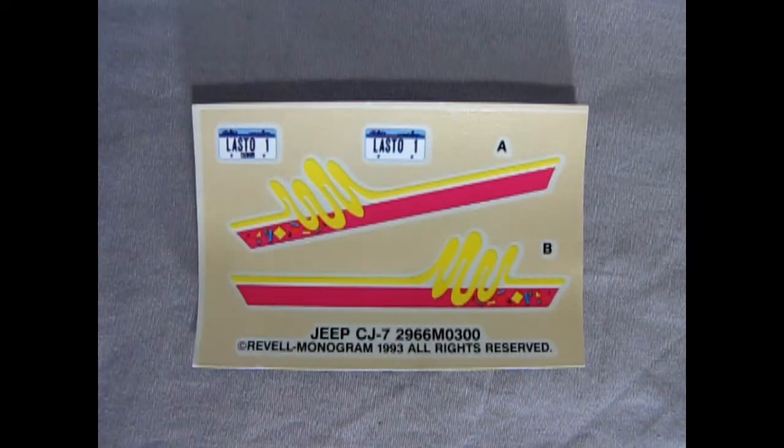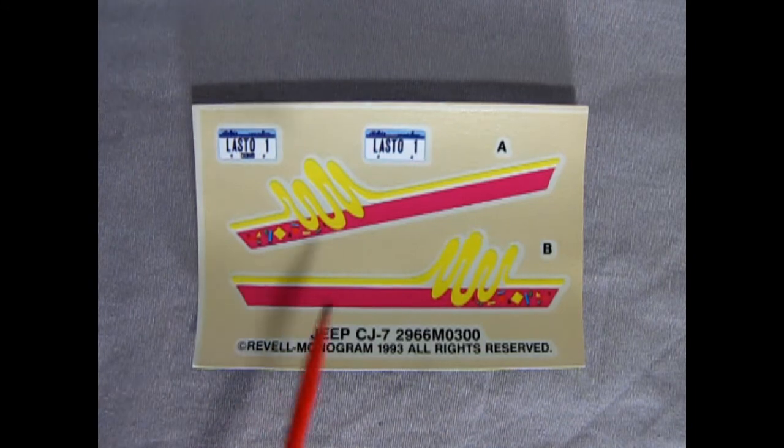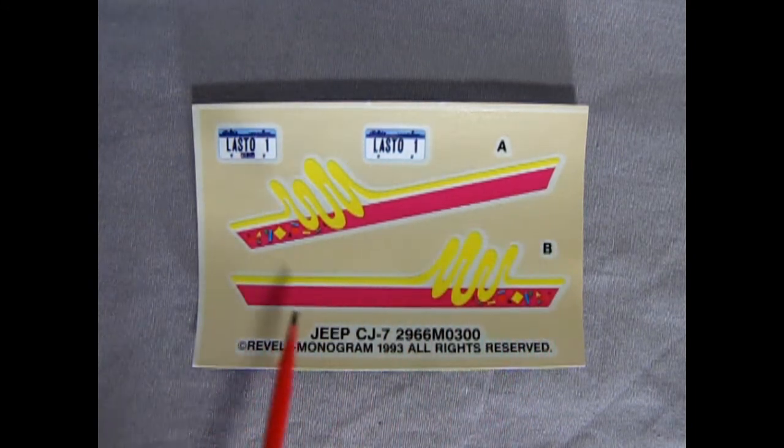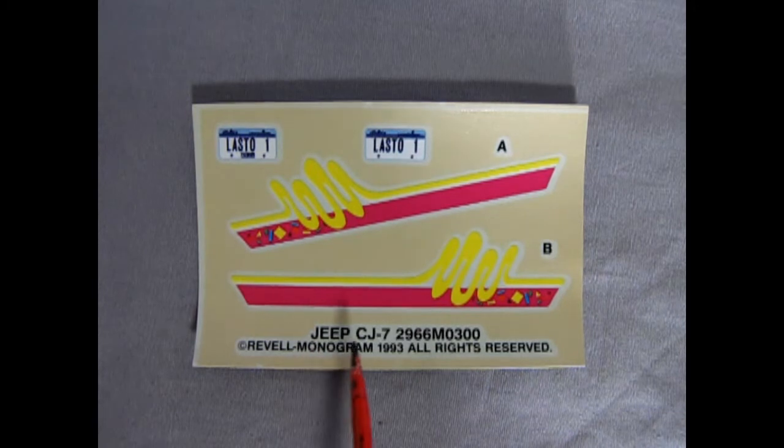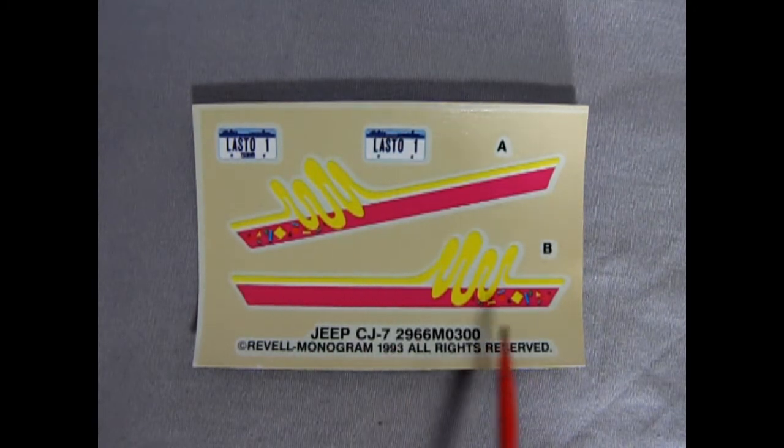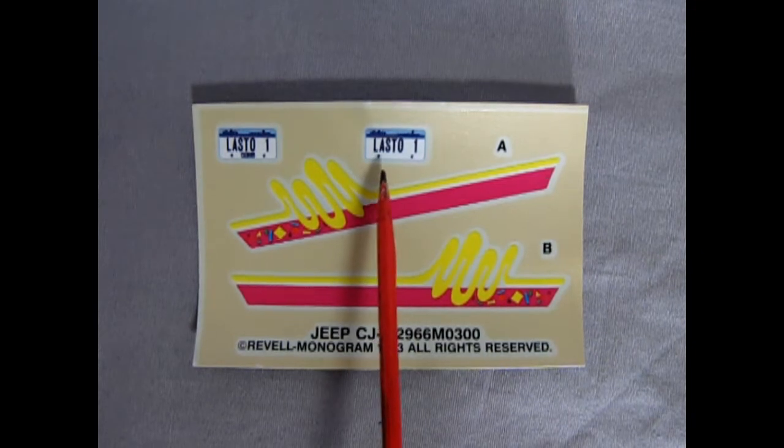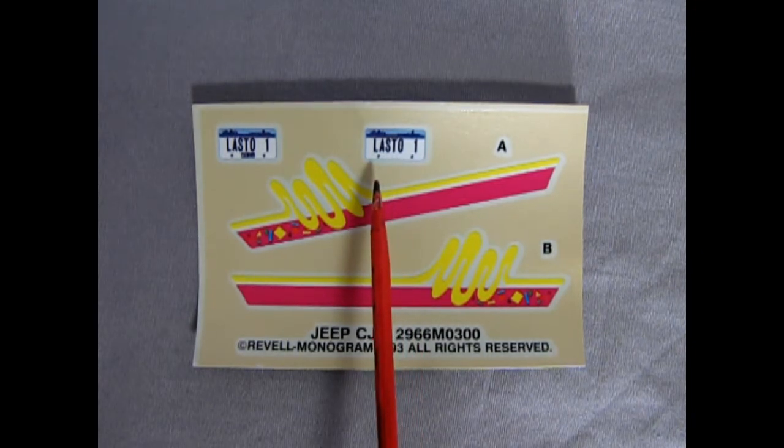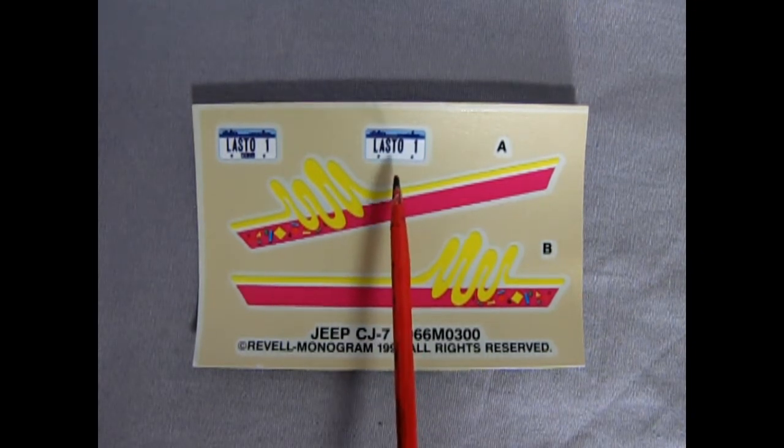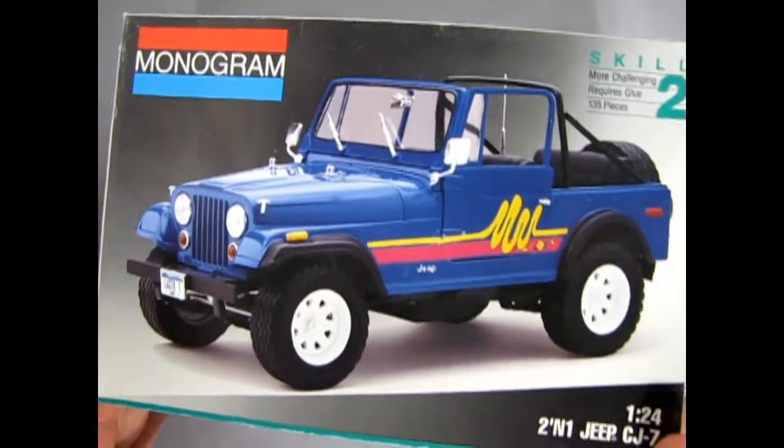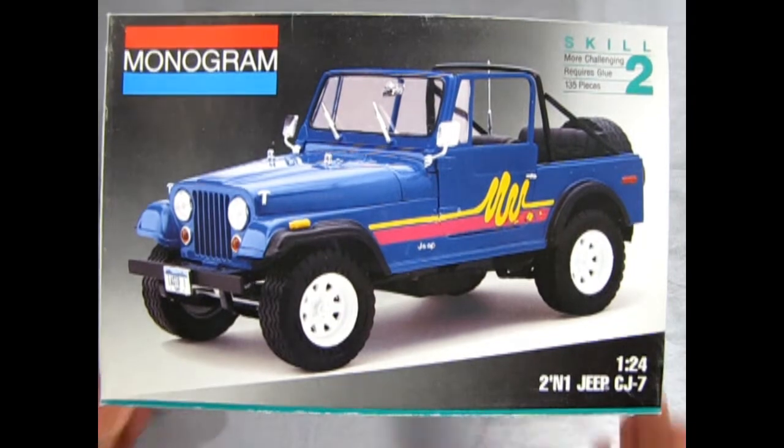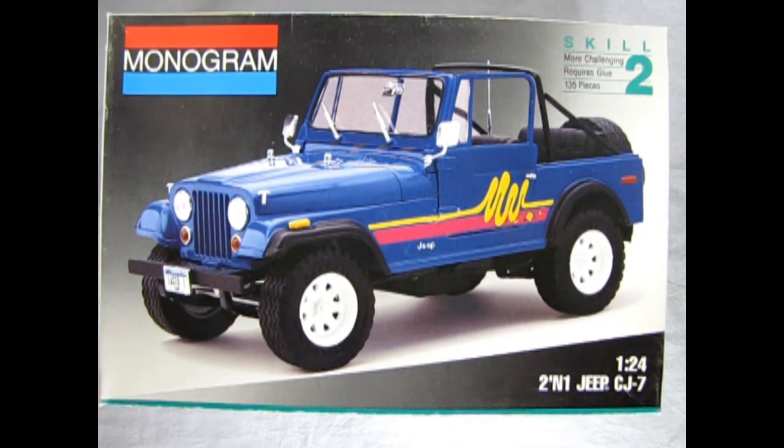Now you can tell that your model kit came from the 90s. When you find graphics in it like this. This of course is sort of the end of the 80s graphics. In the beginning of the 90s. And here we have the license plate that says Lasto 1. So I guess this model was built to Lasto. And that completes our look at our 1977 2-in-1 Jeep CJ7 by Monogram.